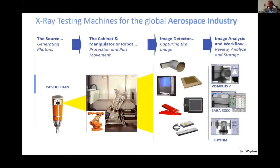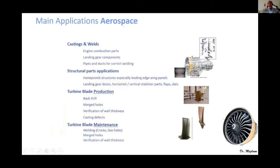From our previous presentation in May 2021 with the GMP team, aerospace technology has a very big opportunity using digital radiography. I will highlight three or four slides focusing on aerospace technology. We can use the source cabinet, image detectors, software, and different workflows. In aerospace, we can inspect casting, structural parts, turbine blades, and turbine blade maintenance — all of these aerospace parts can be inspected using computerized tomography.